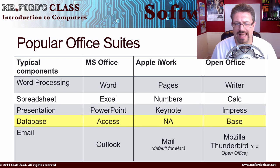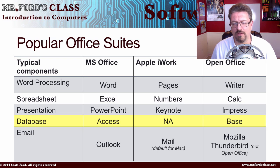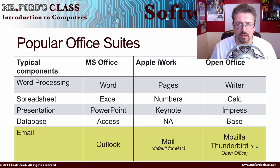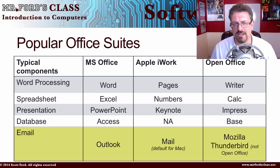Database: Microsoft Office comes with Access. Apple does not have a database program as part of iWork — if you want database on a personal computer, I'd suggest FileMaker Pro. OpenOffice has Base. For email: Microsoft Office comes with Outlook. Apple iWork doesn't have a native email program, but Macs come with their Mail app. OpenOffice doesn't currently include email, but if you need a free, powerful email client, check out Mozilla Thunderbird — same organization that makes Firefox.